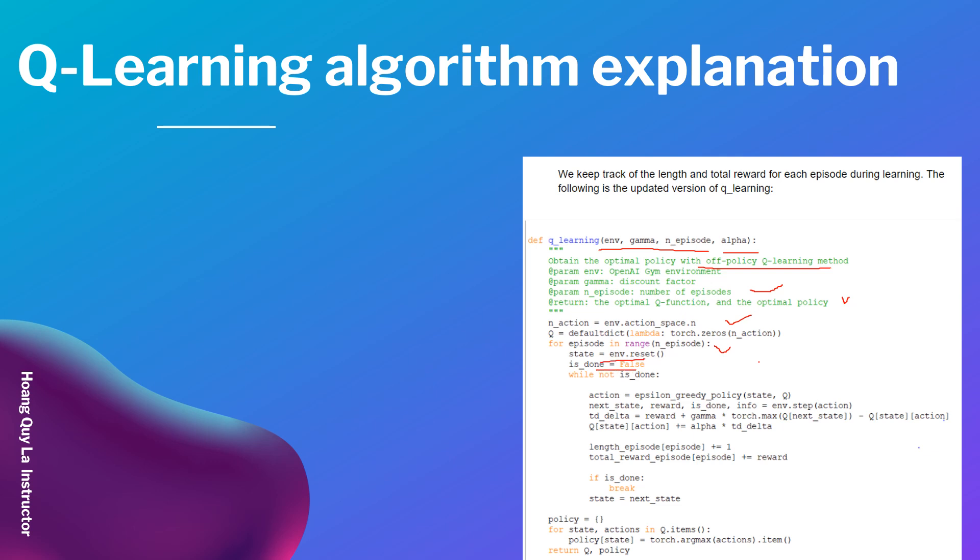For each episode in the number of episodes, we reset the environment and make a new variable called is_done equal False. If it's not done, the action is epsilon-greedy policy for that Q. Then next_state, reward, and is_done info equals environment.step(action). We've got temporal difference delta equal reward plus gamma times max of next_state minus Q[state, action].